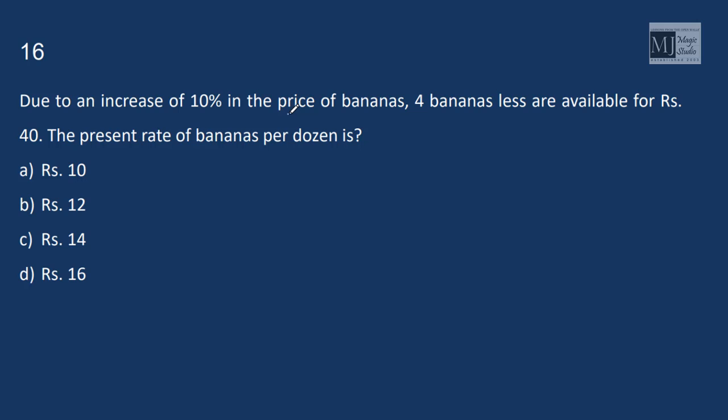Due to an increase of 10% in the price, 4 units less are available for rupees 40. We can use the algebraic method, but why to use when we can use our rule 1, line changing rule and find the answer in no time. Price increases by 10% that is 1 by 10. That means consumption will decrease by 1 by 10 plus 1 that is 1 by 11. Now 1 by 11 is equivalent to 4 units. That means 1 is equivalent to 44 units.